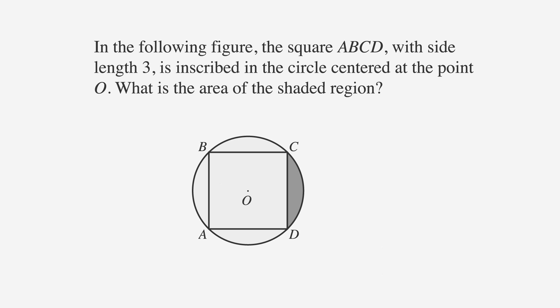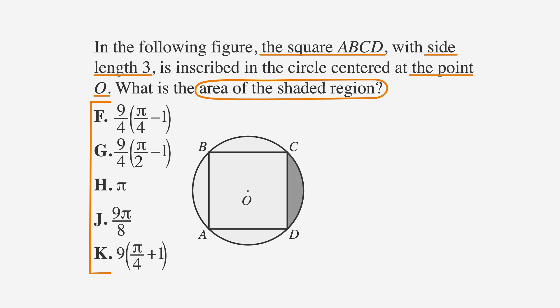In the following figure, the square ABCD with side length 3 is inscribed in the circle centered at the point O. What is the area of the shaded region? As always, let's underline the facts, circle the key terms, and label the answer choices, which represent the area of the shaded region.